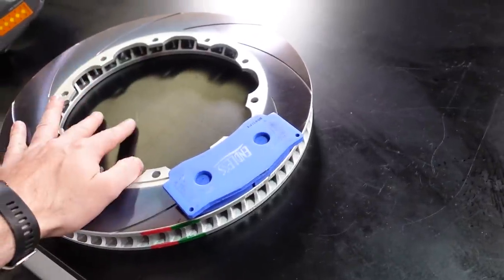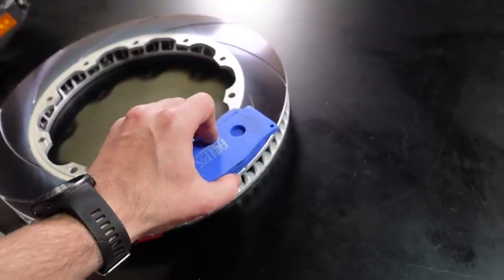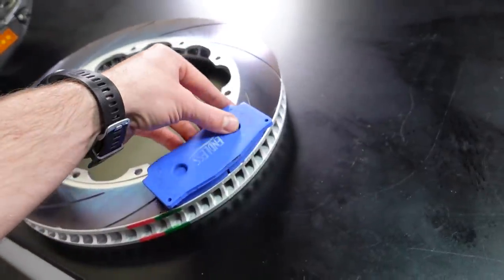Oftentimes when you're fitting aftermarket brakes to a car, you are having to position the caliper on the disc yourself. That means making your own mounting brackets, a lot of custom work involved with that.